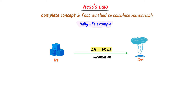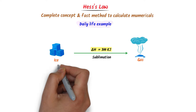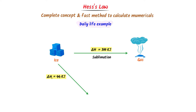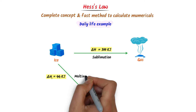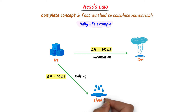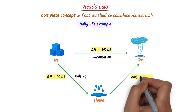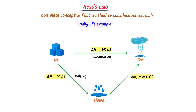Now consider that this ice absorbs ΔH₁ = 44 kilojoule energy and melts down to liquid or water. Lastly, this liquid absorbs ΔH₂ = 256 kilojoule energy and evaporates to gaseous state.